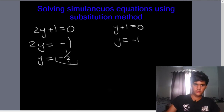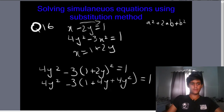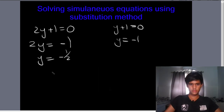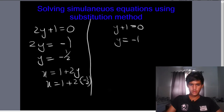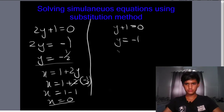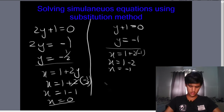Now we substitute both y values back into the equation x = 1 + 2y. When y = minus 1/2: x = 1 + 2 times (minus 1/2) = 1 minus 1 = 0. When y = minus 1: x = 1 + 2 times (minus 1) = 1 minus 2 = minus 1. So we have both values of x.